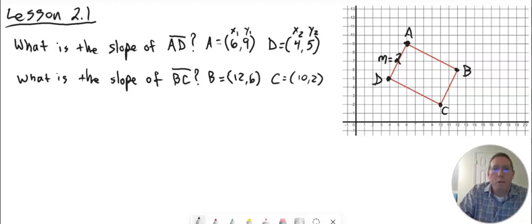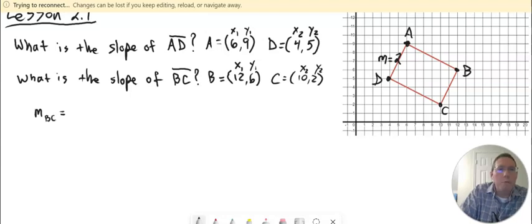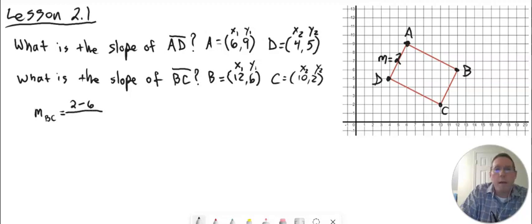We'll call B X1 and Y1, and C X2 and Y2. So the 2 is Y2, the 10 is X2, the 6 is Y1, and the 12 is X1. Now we're going to set up the slope: M of BC equals Y2 minus Y1 over X2 minus X1. It's important to notice that the numbers that come second in the numerator and denominator both come from the same coordinate — you can't mix them up.